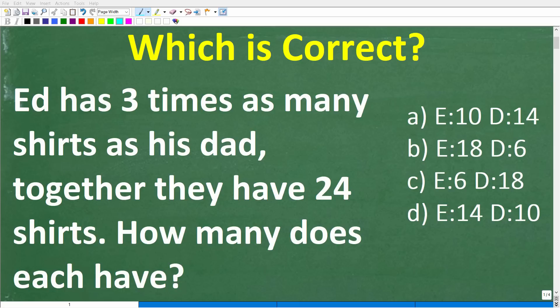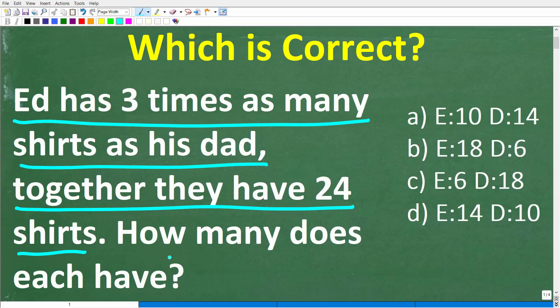Okay, so let's see if you have the math skills needed to solve this math word problem, which is the following. Ed has three times as many shirts as his dad. Together they have 24 shirts. How many shirts does each have?